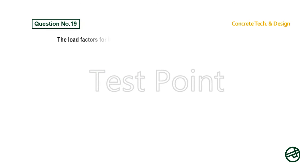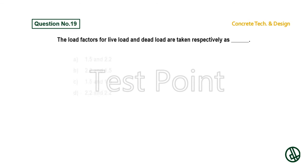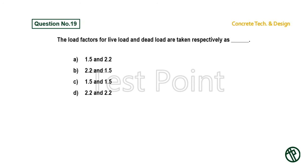Question number 19: The load factors for live load and dead load are taken respectively as — Option A: 1.5 and 2.2. Option B: 2.2 and 1.5. Option C: 1.5 and 1.5. Option D: 2.2 and 2.2. Answer is Option B: 2.2 and 1.5.